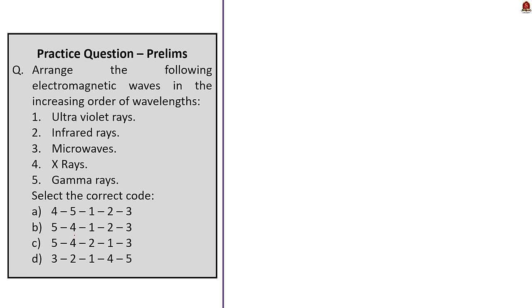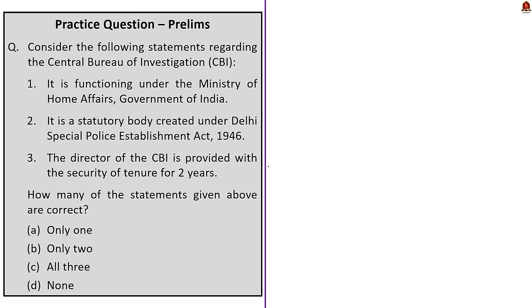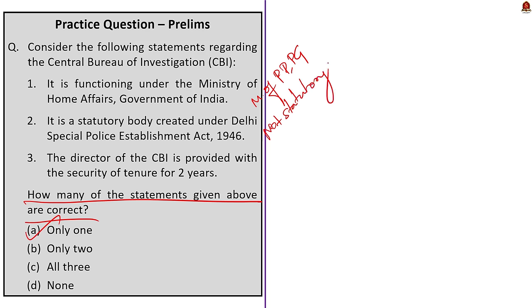The third question asks you to arrange electromagnetic waves in increasing order of wavelength. The correct answer is option B: first gamma rays, then X-rays, then ultraviolet rays, then infrared rays, then microwaves. The fourth question is about the CBI, with three statements, asking how many are correct. The correct answer is option A: only one — because currently CBI is functioning under the Ministry of Personnel, Pension and Public Grievances, and CBI derives its power from the DSPE Act but is not created under the act, so it is not a statutory body.